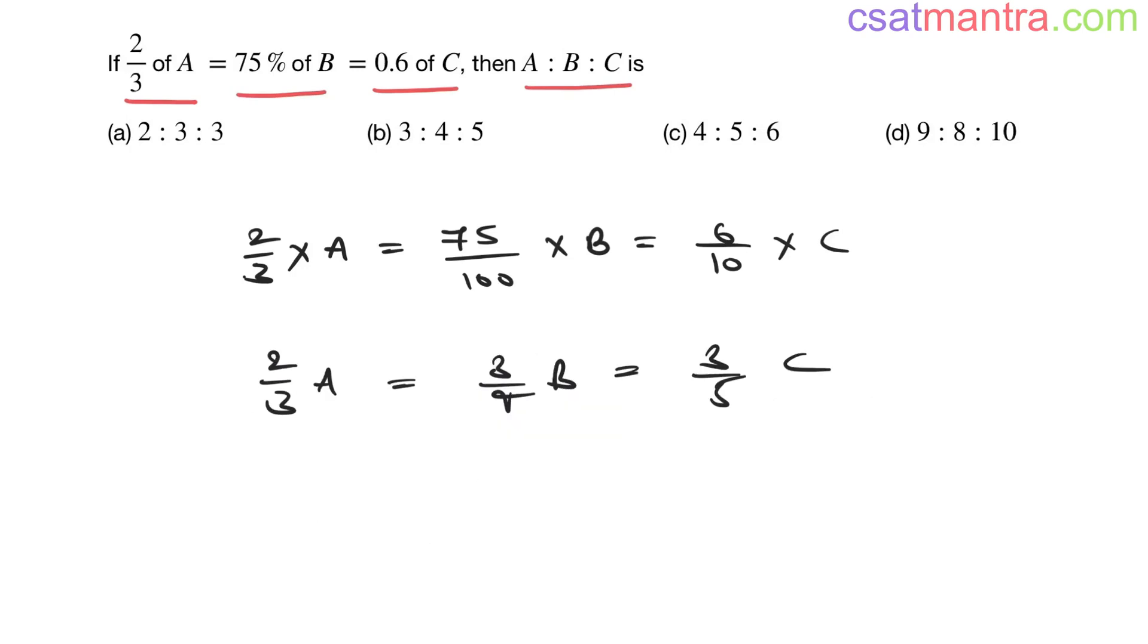2/3 A is equal to 3/4 B is equal to 3/5 C. Now you find out A:B. You bring B this side, so it's A by B. It's in multiplication here, it will be in division. Denominator, it's in numerator, it will be in denominator.